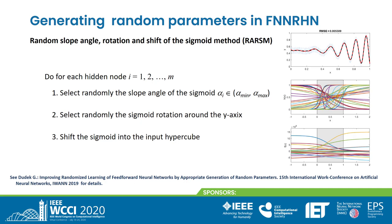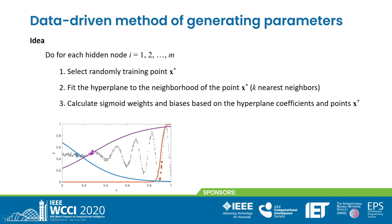Another recently proposed method is the method of random slope angle, rotation, and shift of the sigmoids. It selects slope angles of the sigmoids inside the range alpha-min and alpha-max — these are two hyperparameters adjusted to the target function. Then it randomly rotates the sigmoids around the y-axis, and finally shifts them into the input hypercube. Details can be found in this work.